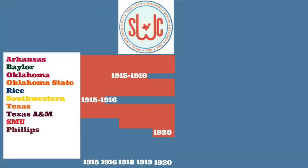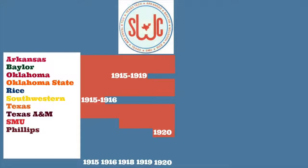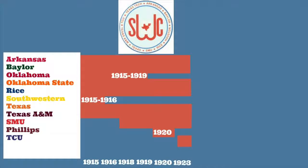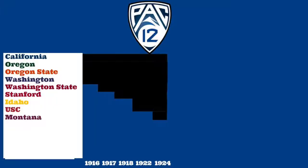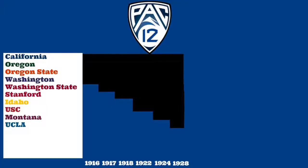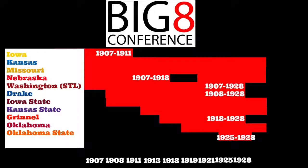In 1920, Phillips played its only year in the Southwest. In 1921, Nebraska rejoined the Missouri Valley. In 1922, USC and Idaho joined the PCC. In 1923, TCU joined the Southwest. In 1924, Montana joined the PCC. In 1925, Oklahoma State (then Oklahoma A&M) left the Southwest to join the Missouri Valley. In 1928, UCLA joined the PCC. That same year, Oklahoma State, Washington University, Grinnell, and Drake left the Missouri Valley, which was renamed the Big Six.